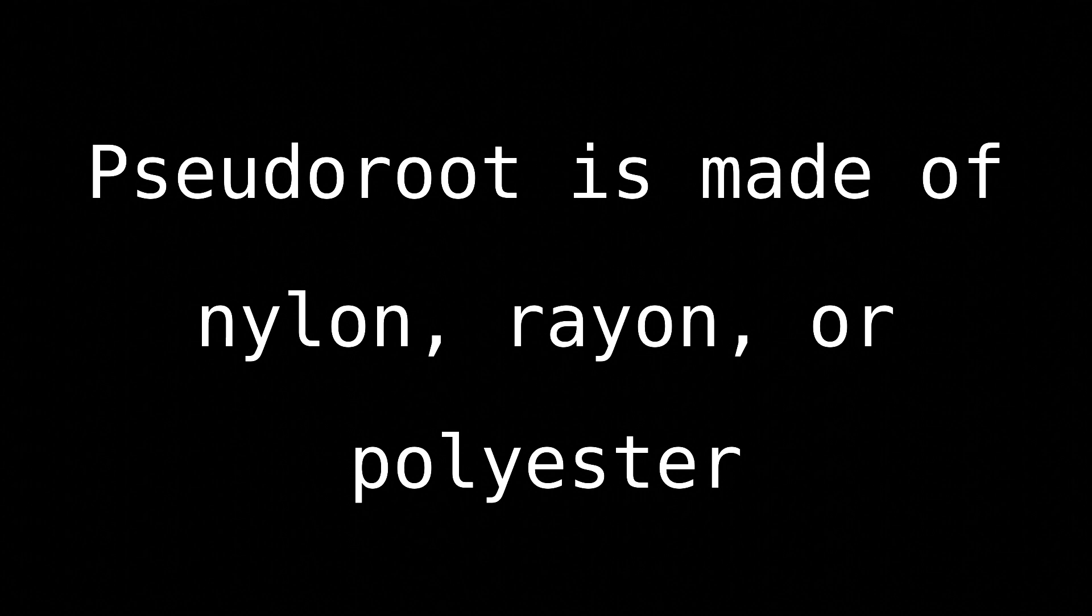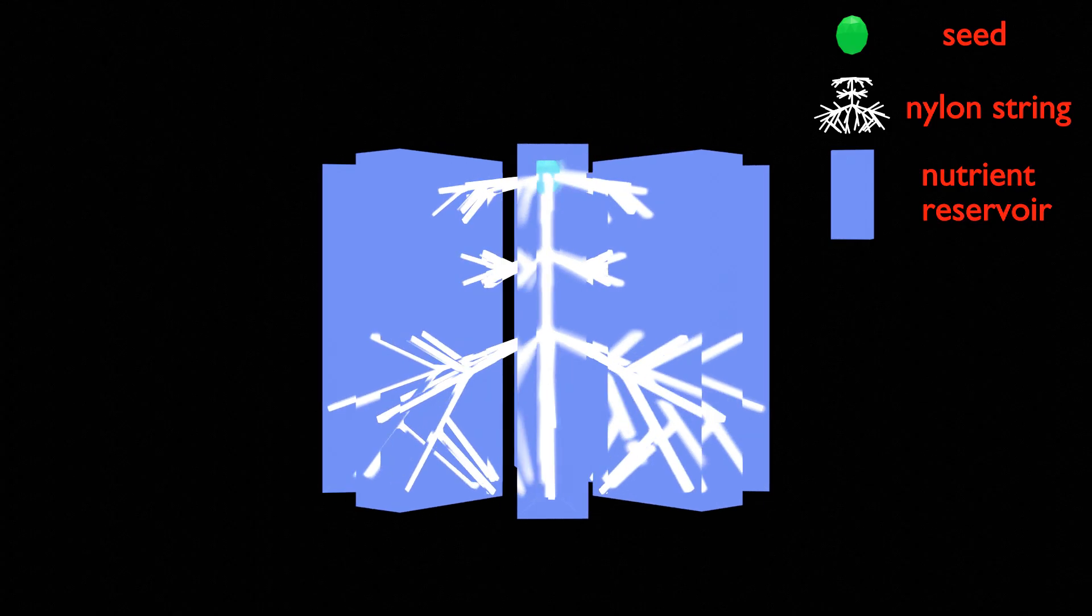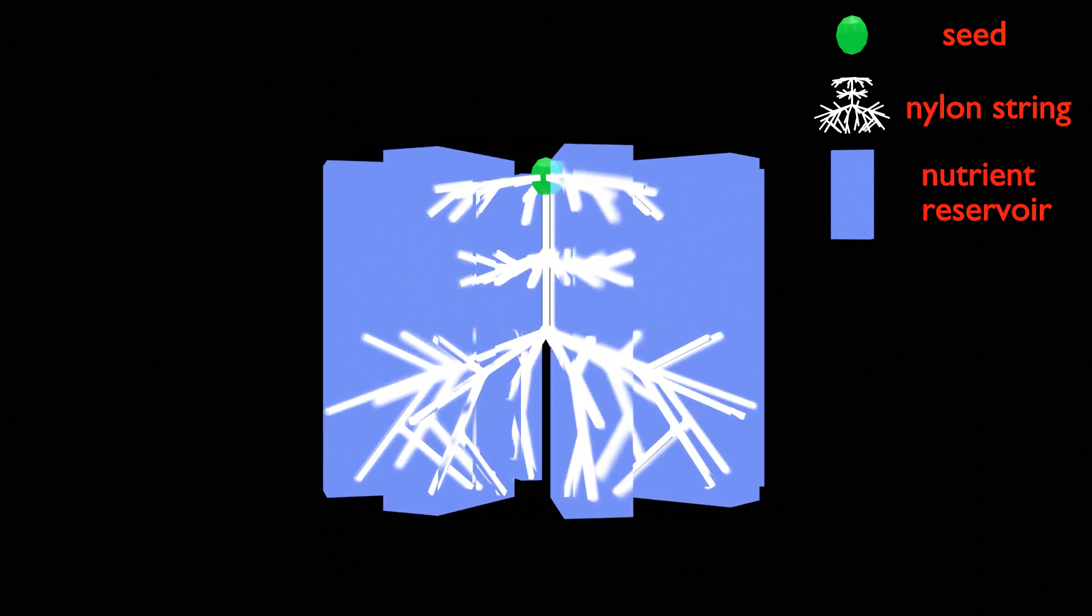Pseudoroot is the world's first synthetic reusable grow media capable of growing plants from seed to maturity. I call it Pseudoroot because the design approximates the form of a mature root system.